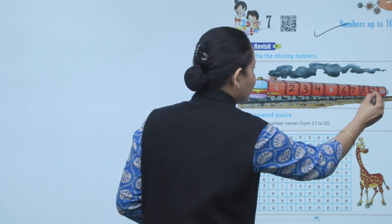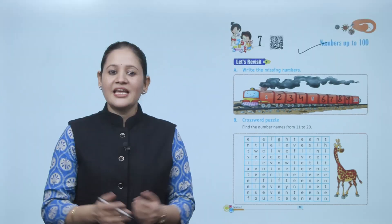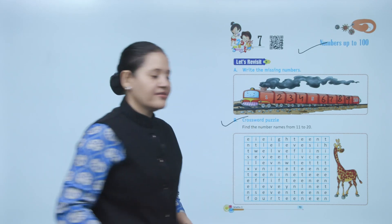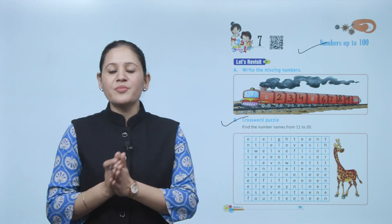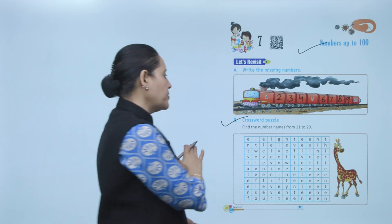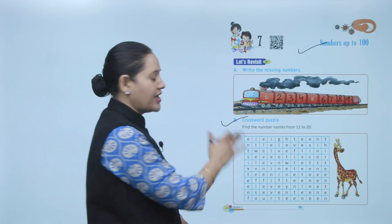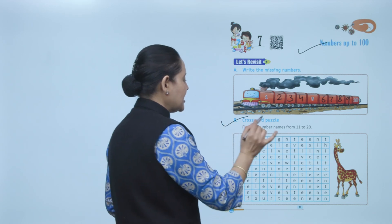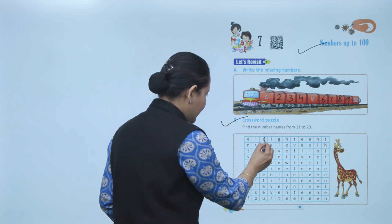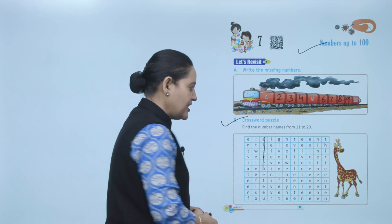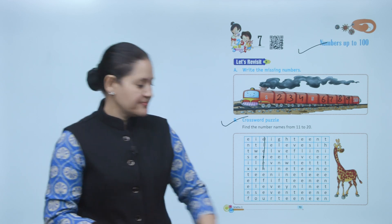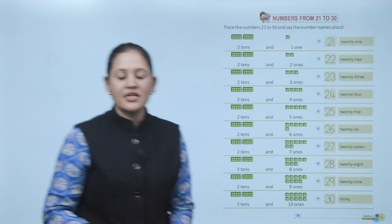8, 9, 10. Next is a crossword puzzle — find the number name from 11 to 20. A crossword puzzle is given to you. You have to find the number names from 11 to 20. E-L-E-V-E-N — so here is number 11. Like this you have to find the other number names.